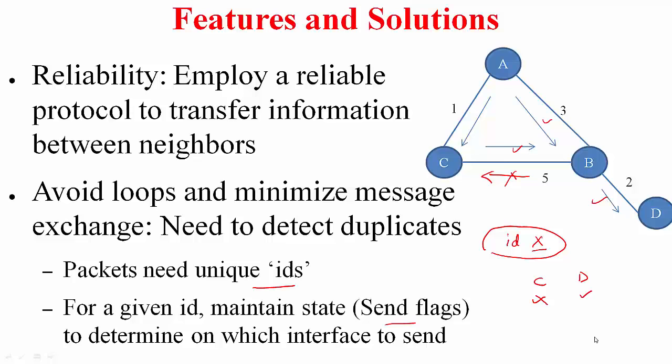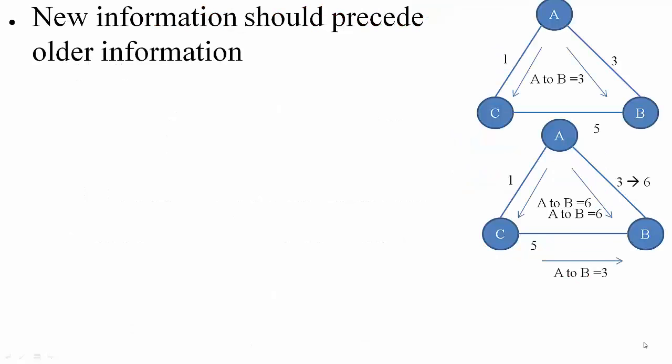We are not done yet. This is in fact the simpler problem to handle. There are more complex issues. In a practical setting, topology changes in which case this new information should precede the old information. Again let me give an example. In this topology, let's say the cost of 3 has changed from 3 to 6, but prior to this A has sent out information that A to B cost is 3 to both nodes B and C. C received this information, B also received it. Right after this, let's say the cost changed to 6. So A is now sending new information saying that A to B cost is 6. So that information has now reached B and it has also reached C. But prior to C acting on it, let's say C had already sent this information to B. So B has received this first, after this it has received this A to B equals 3. So should it act on this or should it act on this? How does it know which one is the newer information?